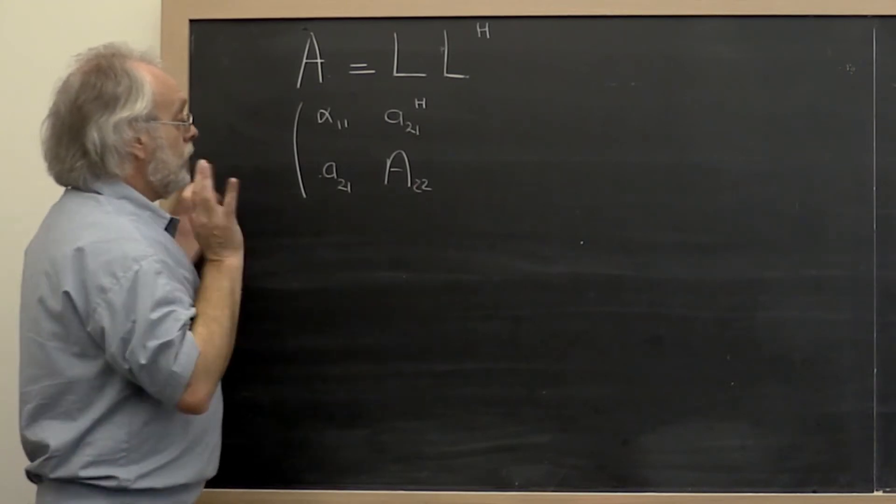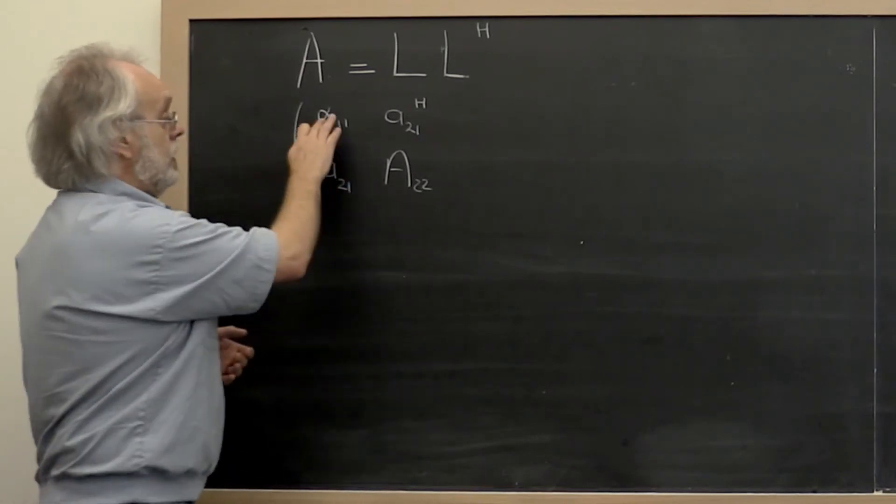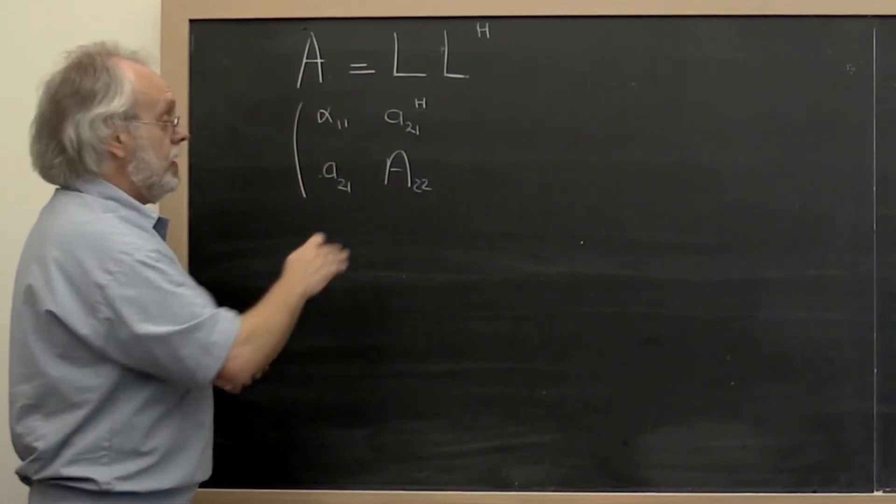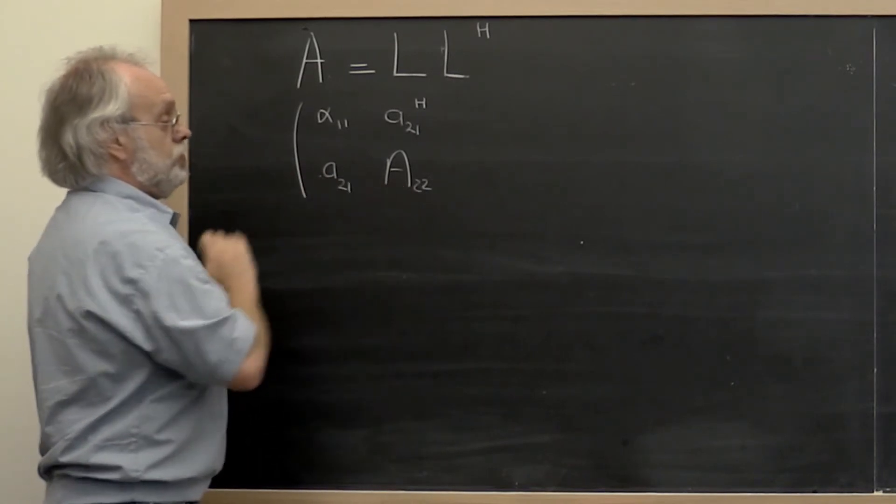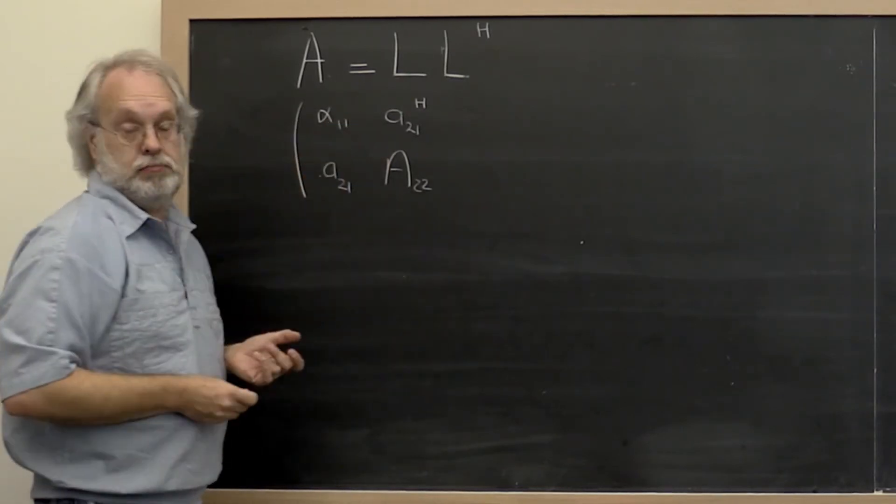And the other thing we can deduce is that alpha_1,1 must be real because it must be equal to its conjugate. And we conclude that A_2,2 is itself Hermitian because, well, if you work it out, it must be.